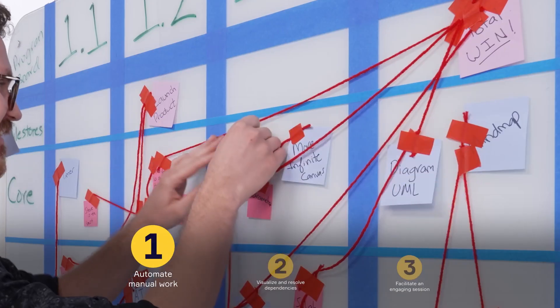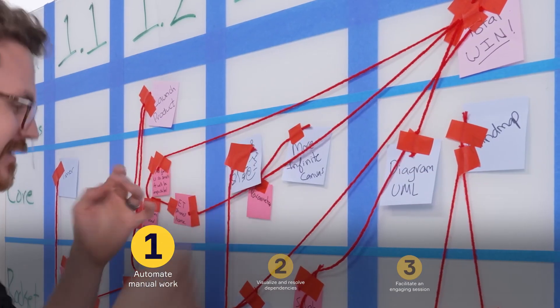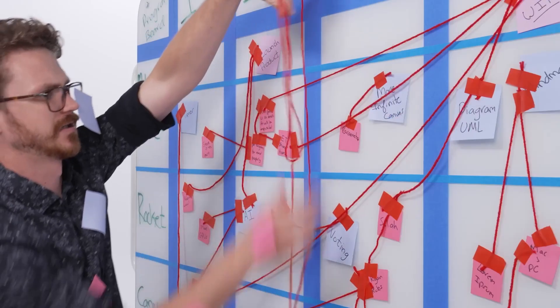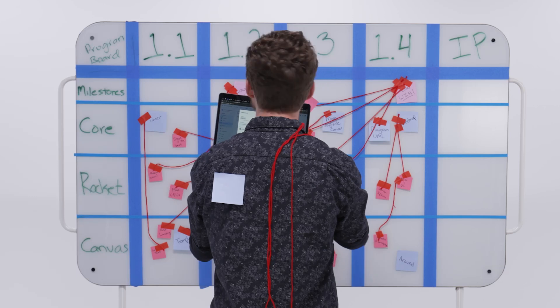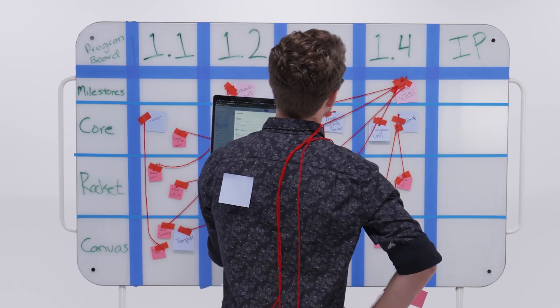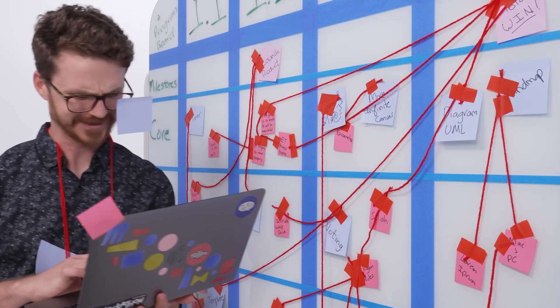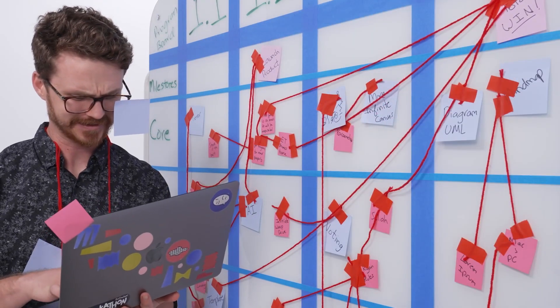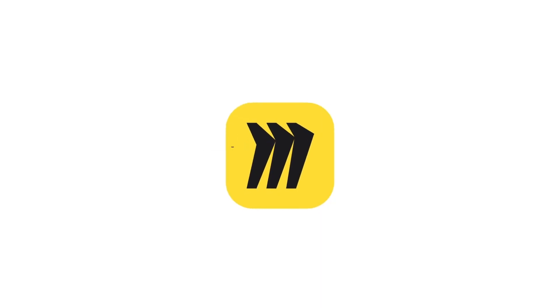PI Planning comes with hours and hours of manual work before and after the event to transfer information between several tools. This is where Miro's Planner comes in.